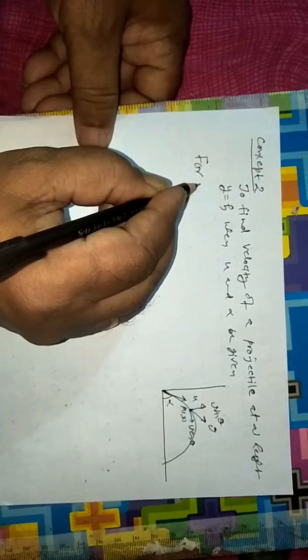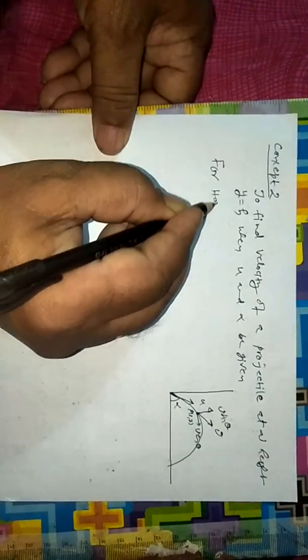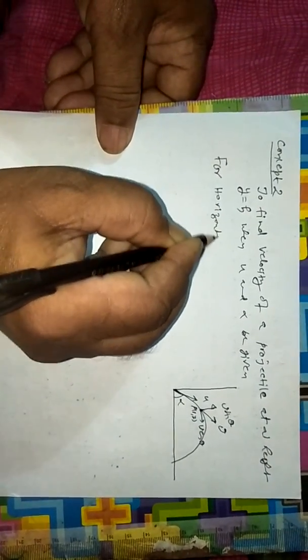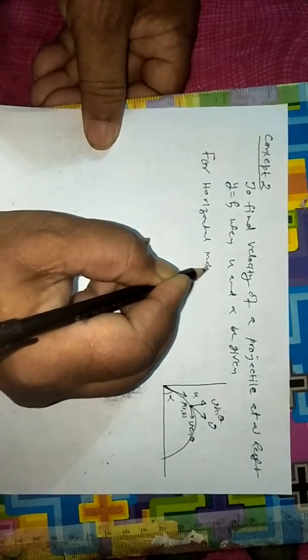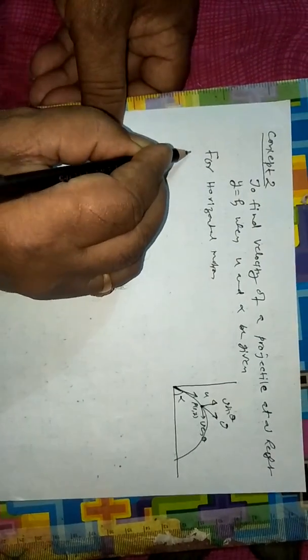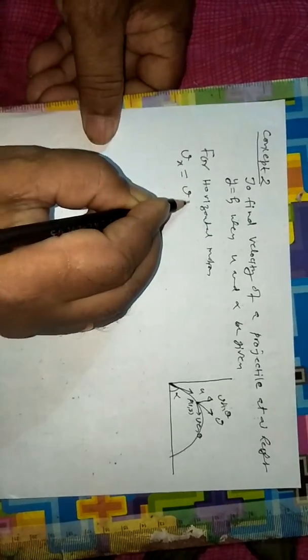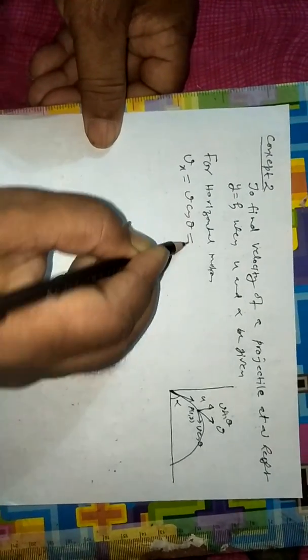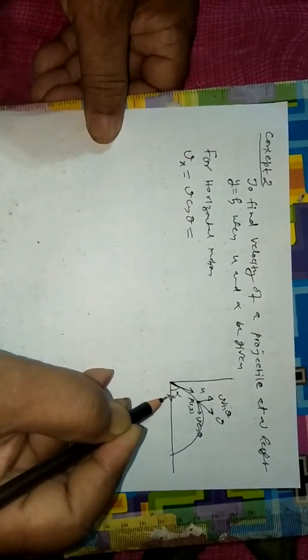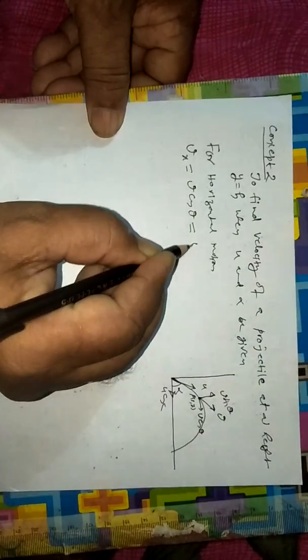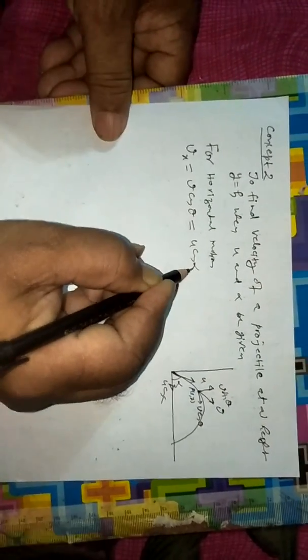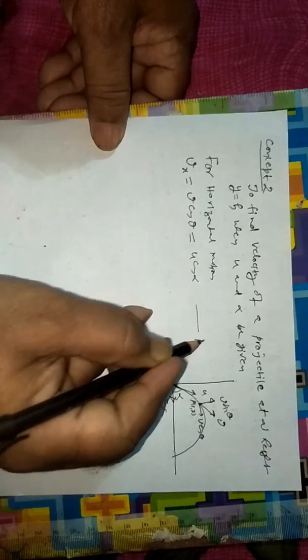For horizontal motion, v_x equals v cos theta equals u cos alpha. This is the first equation.